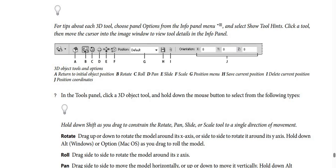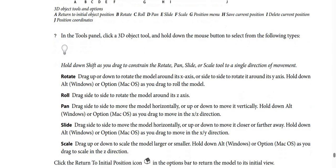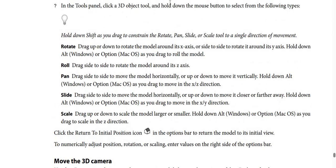The 3D object tools and options are: A — return to initial object position; B — rotate; C — roll; D — pan; E — slide; F — scale; G — position menu; H — save current position; I — delete current position; J — position coordinates. In the Tools panel, click a 3D object tool and hold down the mouse button to select from the available types. Hold down Shift as you drag to constrain the rotate, pan, slide, or scale tool to a single direction of movement.